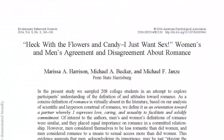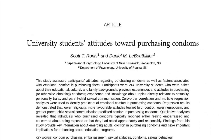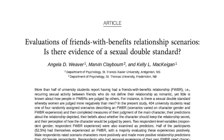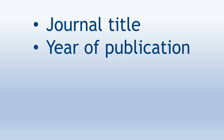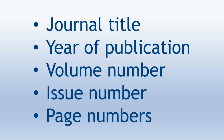The folks at the libraries will always get you the articles you need. To find articles in the method demonstrated today, five pieces of information about the article are most important: journal title, year of publication, volume number, issue number, and page numbers.